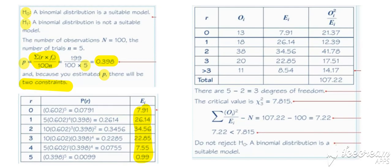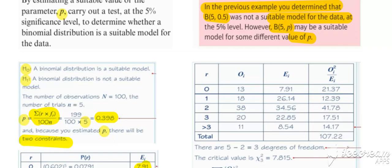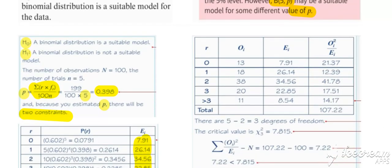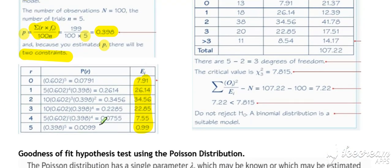We look at combining any cells we need to combine. These last two need to be combined because the last one is lower than 5. We just need to combine those two cells, which we've done here. The others are all fine.